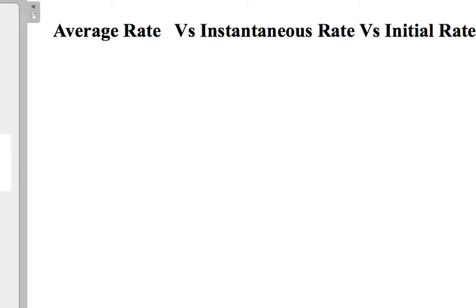So what's the difference between average rate and instantaneous rate and initial rate? Average rate first is the rate over a period of time. So if you were to write this you would have delta, meaning change, and for instance we're dealing with concentration in chemistry. So I will have it as delta C divided by delta T.